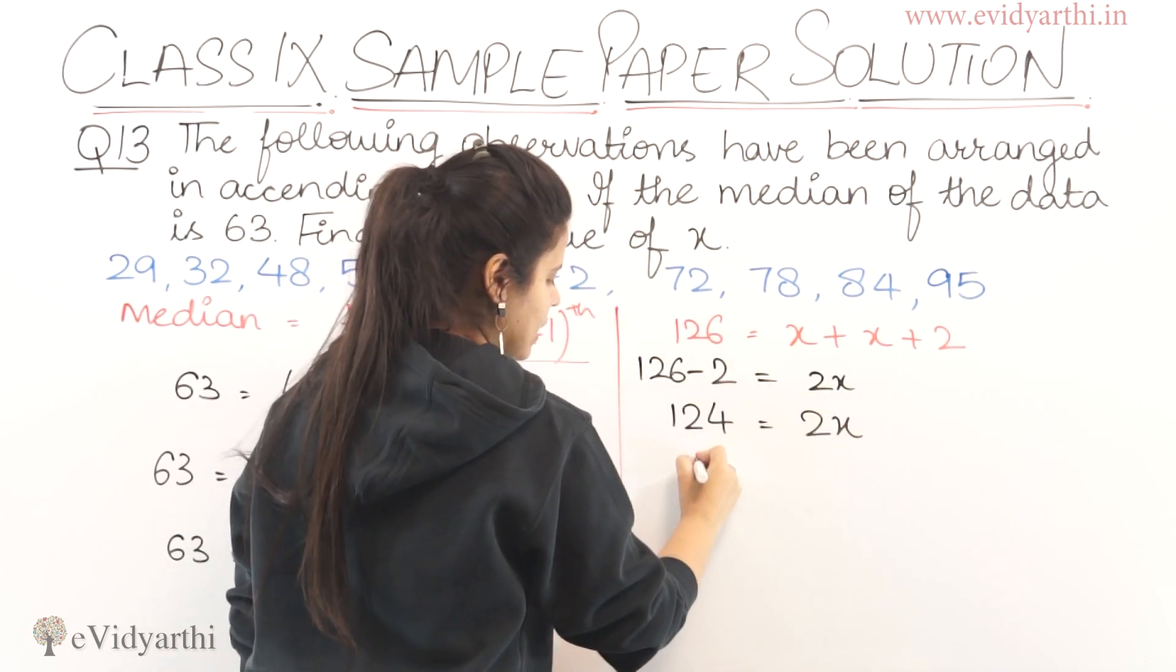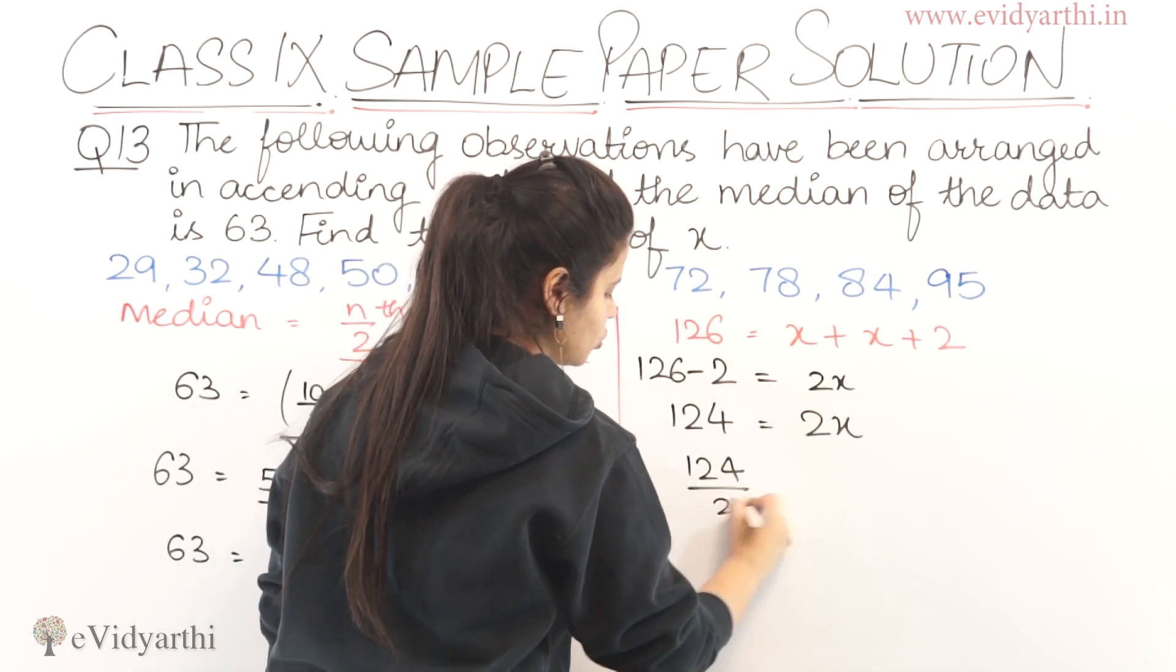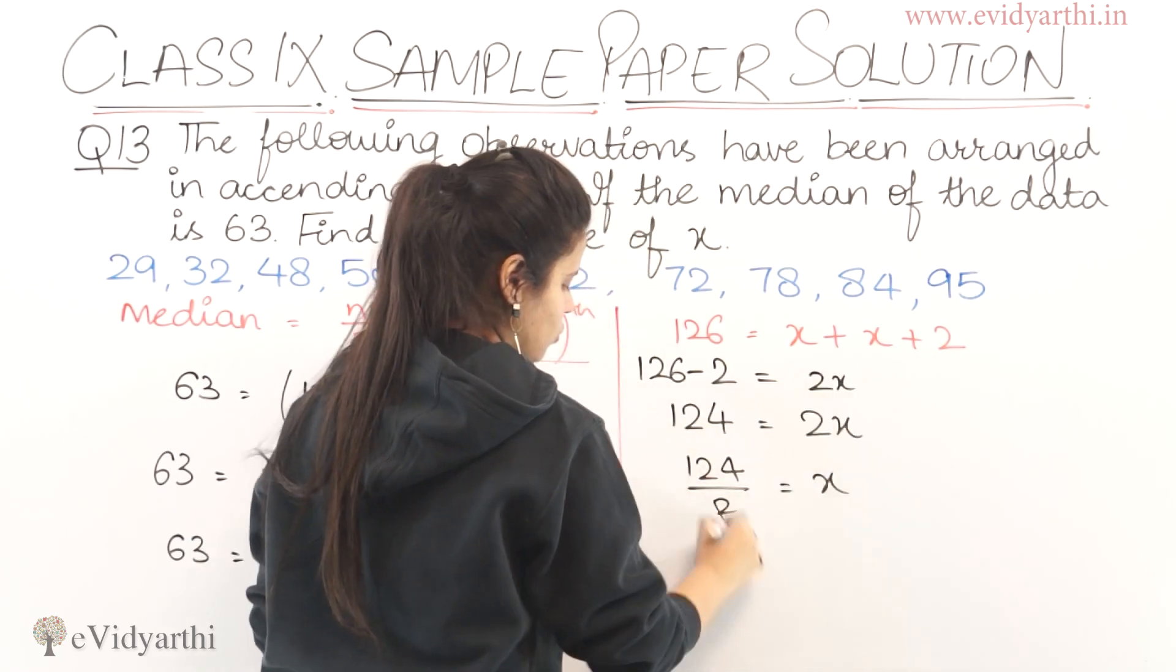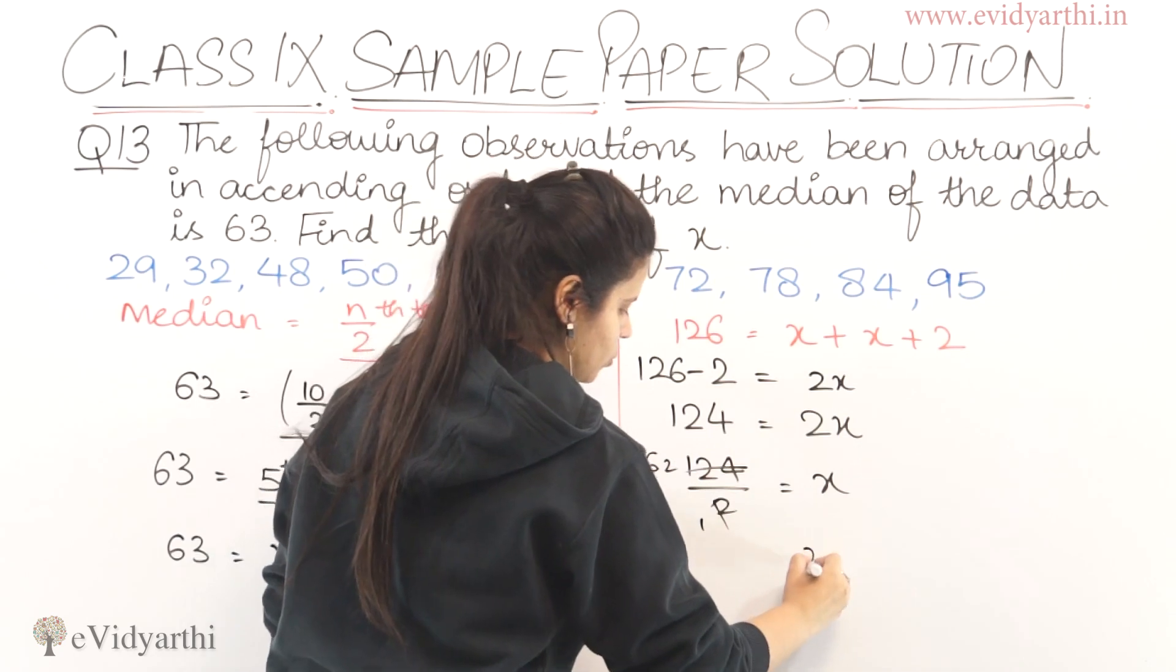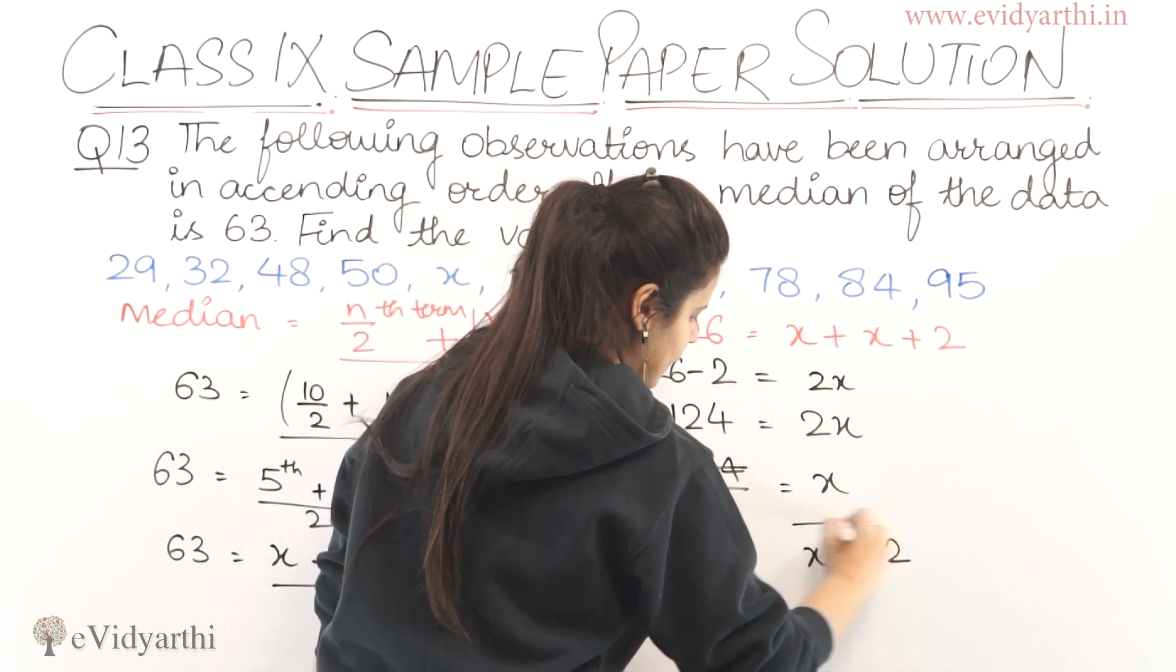2 here multiply or divide? So 124 upon 2 equal to x. This will be 1, this will be 62. So x equals to 62.